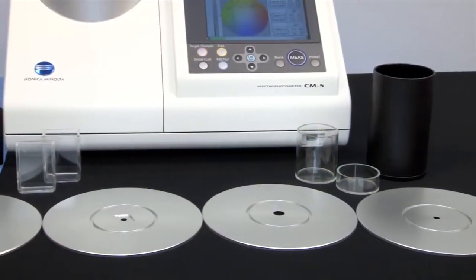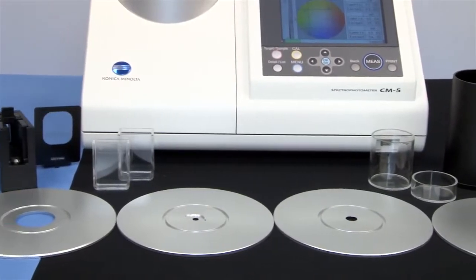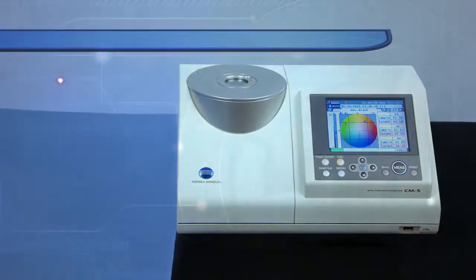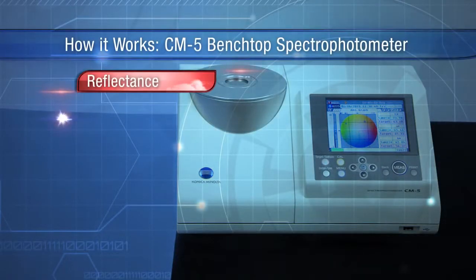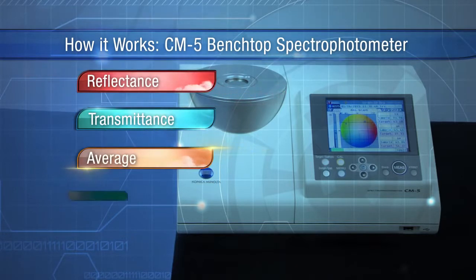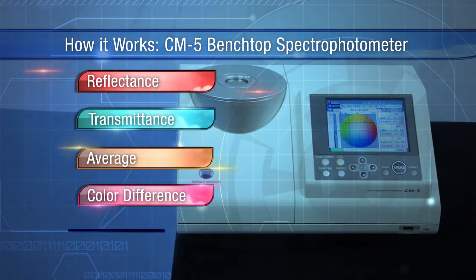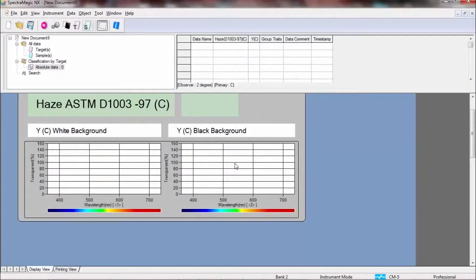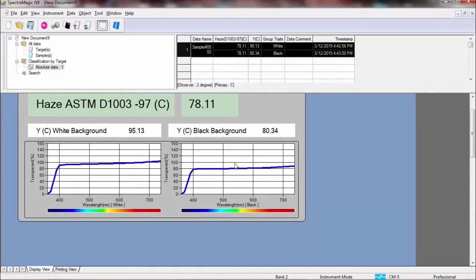A variety of functions and accessories set this innovative spectrophotometer apart. With the versatile CM5 you can measure in reflectance or transmittance, easily calculate average measurements for textured samples, create target values for color difference measurements, and calculate haze through powerful SpectraMagic NX software.